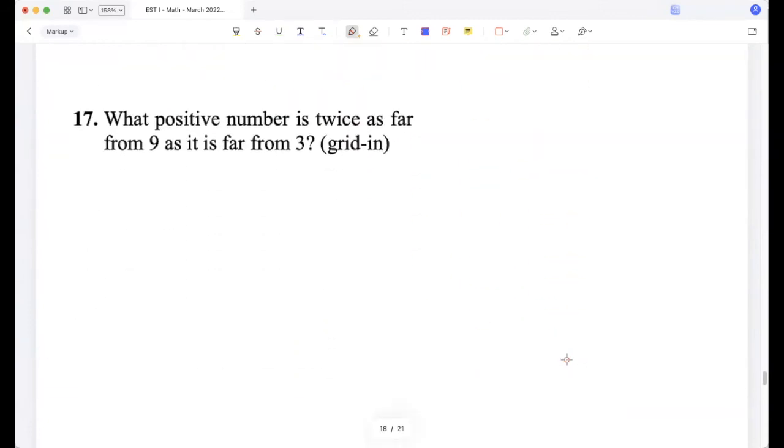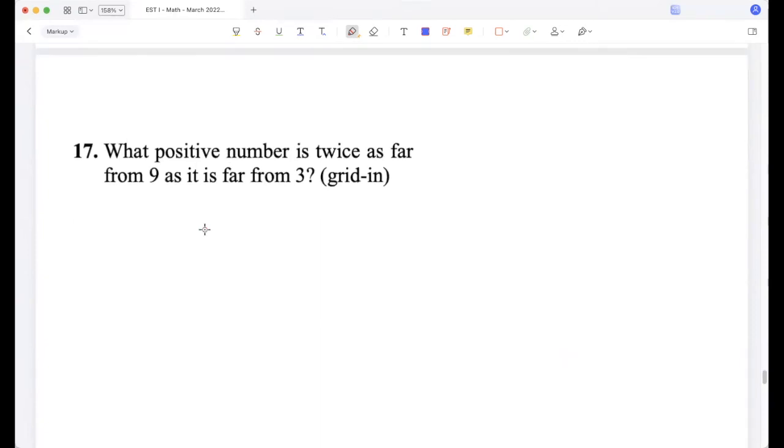What positive number is twice as far from 9 as it is far from 3? So let the number be x. So x minus 9 is 2 times x minus 3. But because we're talking about distances, we should use absolute value. So |x - 9| is ±2(x - 3). So x - 9 is 2x - 6 or -2x + 6.